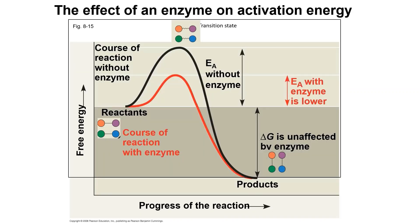Let us take a look at this figure that shows the effect of an enzyme on activation energy. This plot shows free energy versus progress of the reaction. There are two curves: the black curve represents the reaction without enzyme, and the red curve represents the reaction with enzyme. Delta G represents the change in free energy, which is the energy available to break the bonds in the reactants and form new bonds to produce products.